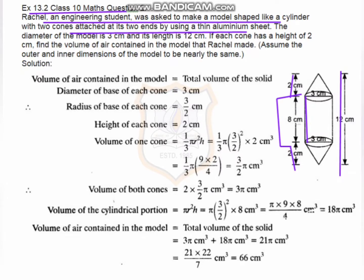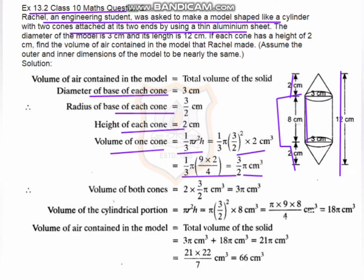The height of the cylinder equals 12 minus 4, which is 8 centimeters. The diameter of the cone is 3, so the radius equals 3/2 centimeters, and the height of each cone is 2 centimeters. The volume of one cone equals 1/3 π r² h = 1/3 × π × (3/2)² × 2.